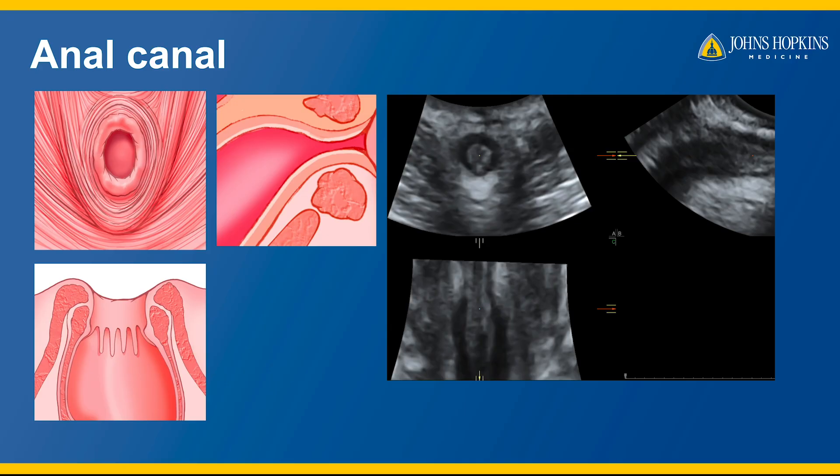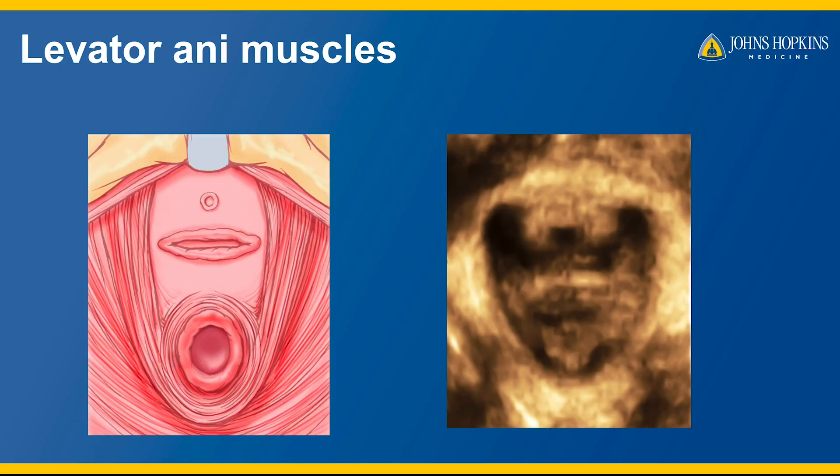The anal canal is also shown in the sagittal and coronal planes, and the levator ani muscles, shown here in the axial plane. Although transperineal ultrasound has a variety of indications, this video will focus on the assessment of levator ani muscle anatomy.